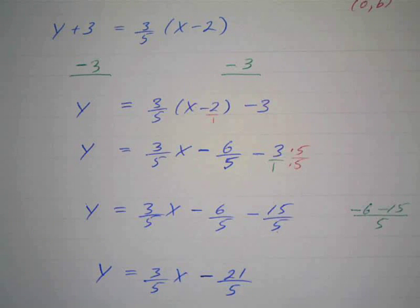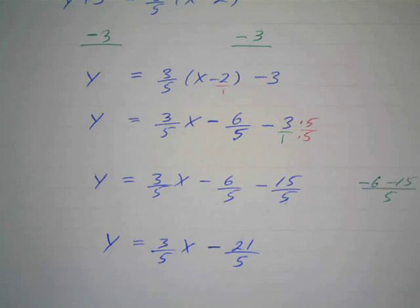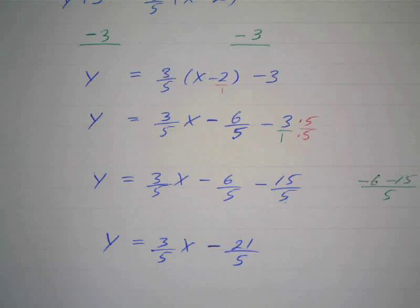And there you go. And we usually leave it like this. You don't have to change it to a mixed number. You could—that would be the same thing as 4 and 1 fifth if you wanted to—but this form is usually acceptable. If you have to graph it, you make it 4 and 1 fifth so you can find the point.